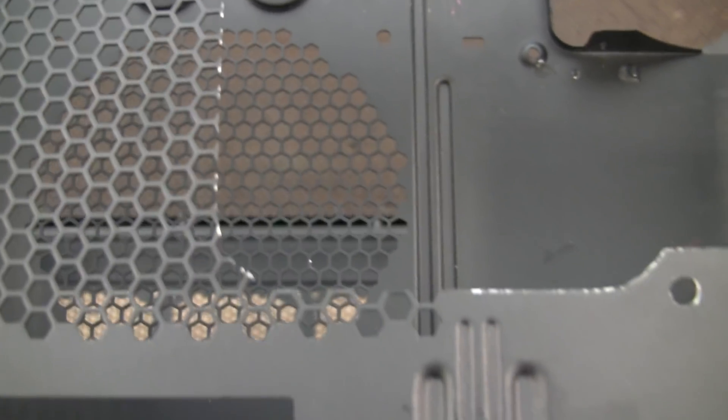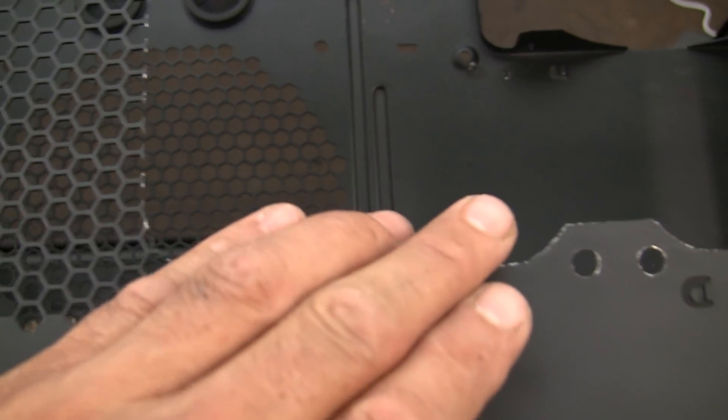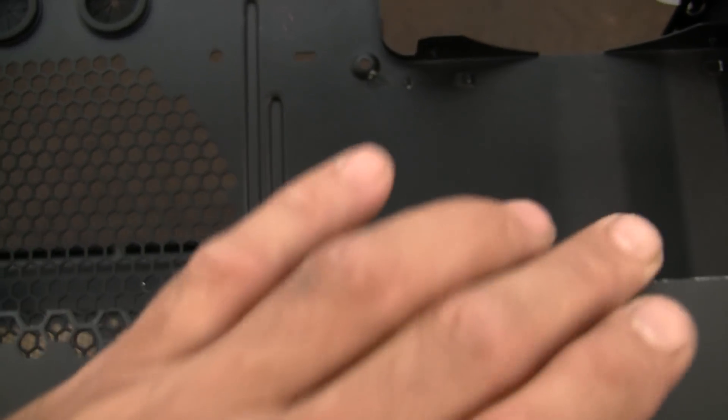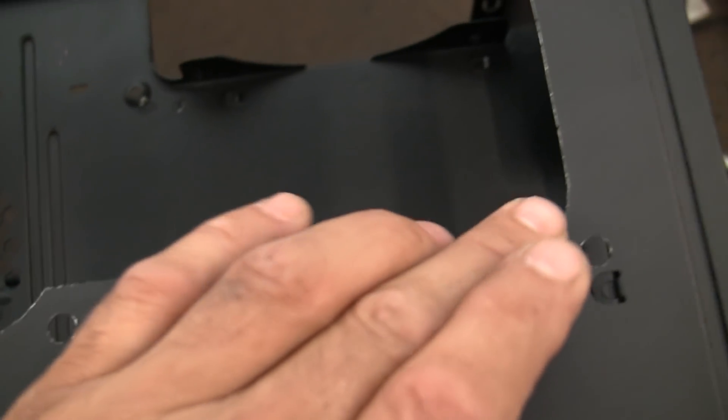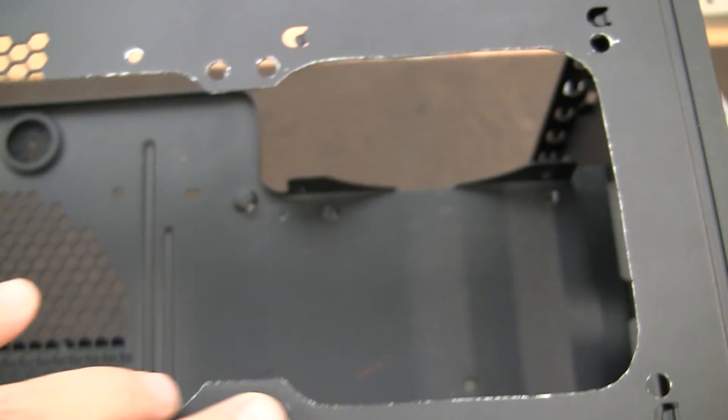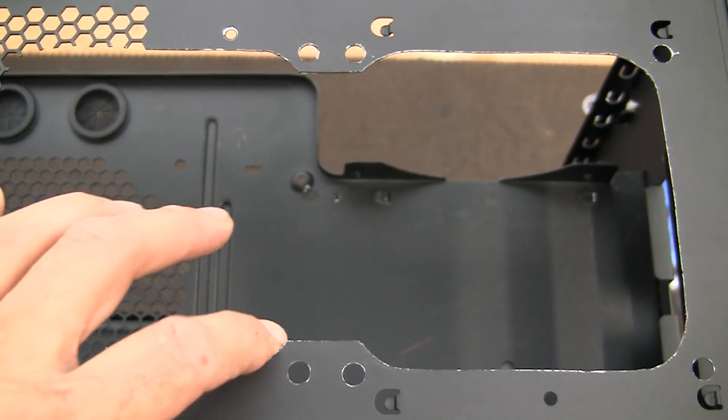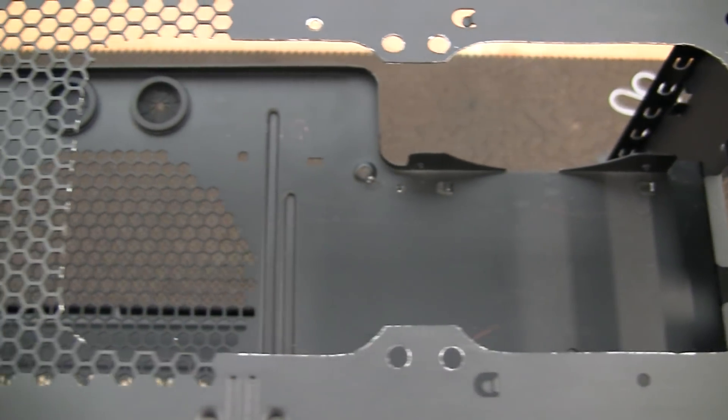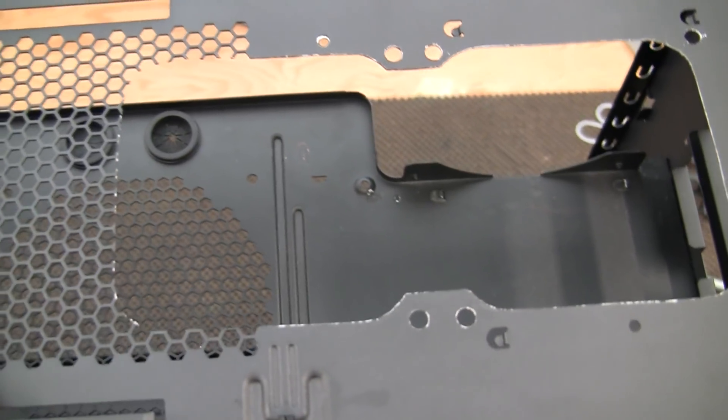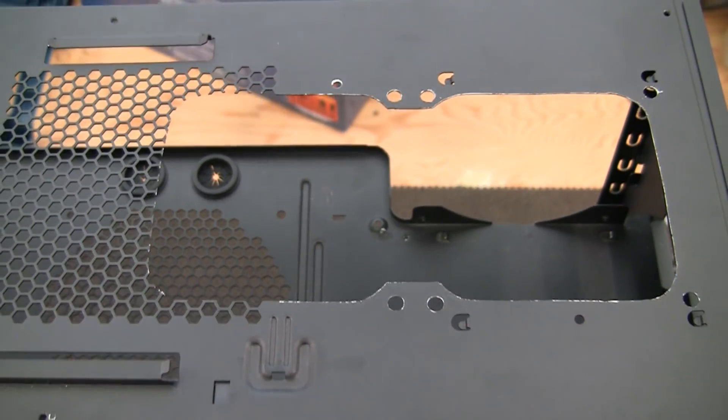I think what we'll do now is—I mean, you can see that it's nice and smooth, probably doesn't even need U-channel on it, but I'm going to go ahead and put U-channel on it anyway. We'll see how it works around this corner here, and then we'll mount the radiator and we'll see how the final product looks.